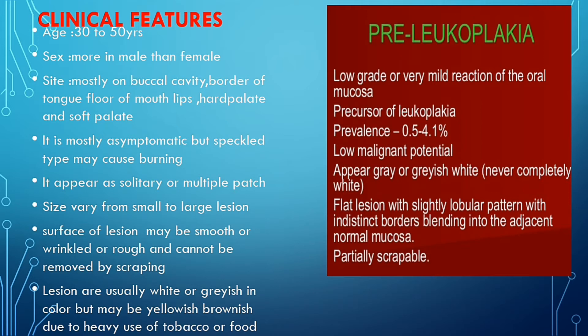Leukoplakia occurs at the age of 30 to 50 years, because people in this age group are mostly involved in smoking or tobacco use. Comparing by sex, it is more common in males than females because males are more often involved in smoking, tobacco use, or alcohol drinking. The site where it mostly occurs is the buccal cavity, where tobacco is placed.